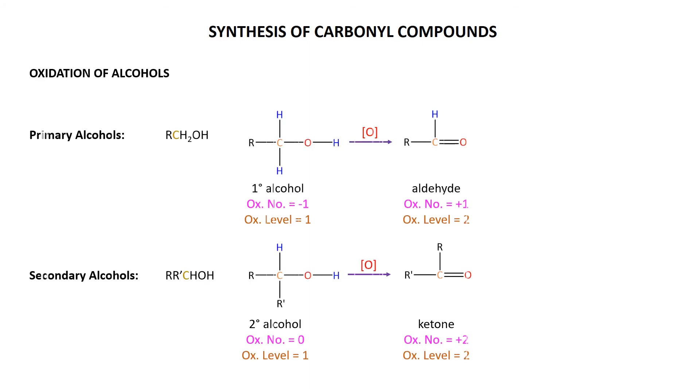I mentioned in the alcohols module that after a while you start to get repetition - you make a group from this, you make the other group from that, and so on. For synthesizing carbonyl compounds, we've actually seen both of the fundamental ways to do it. The number one, massive, big, most important one is oxidation of alcohols.